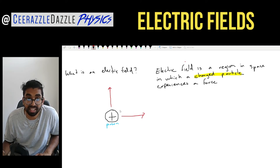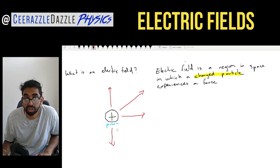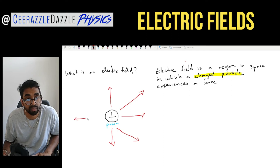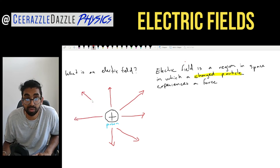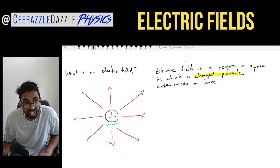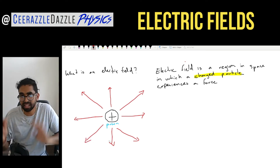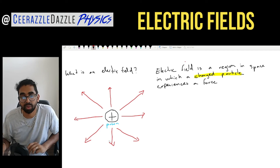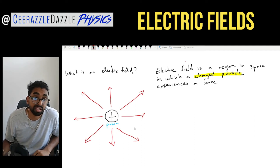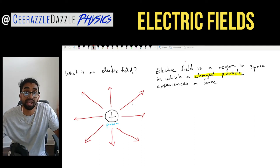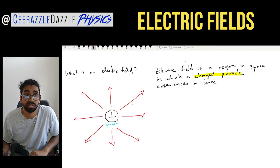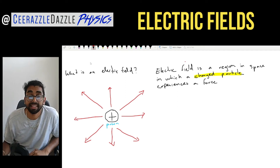The red lines are the electric field lines, and this is for a positively charged particle. In the exam you must use a ruler, and make sure they're all equally spaced — not too clustered in one region. As you can see, the arrows are going away from the positively charged particle.